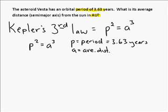So for p, we're going to put in 3.63 years. And the units are fine. This particular equation actually only works if the units on the period are years, and the units on average distance are AU. So we don't have to do any unit conversion here. We just need to figure out what to do with this equation.